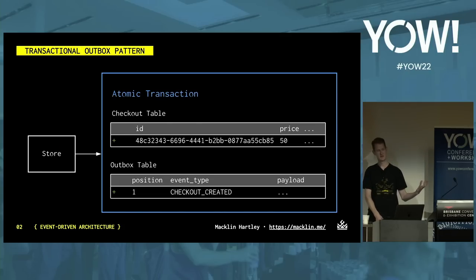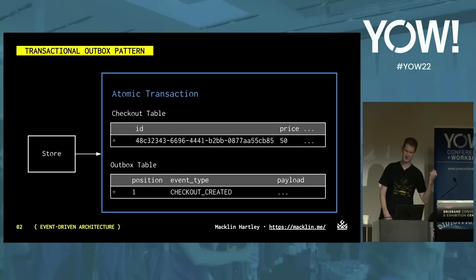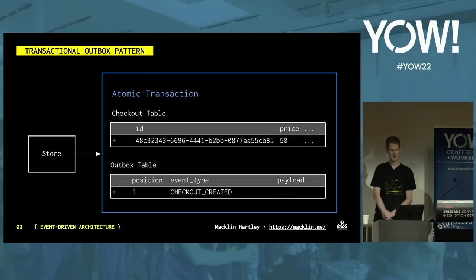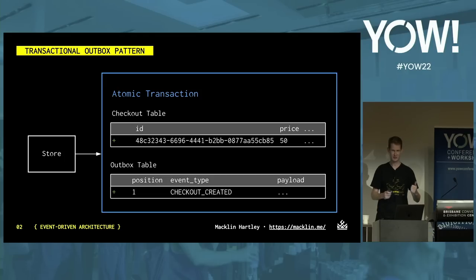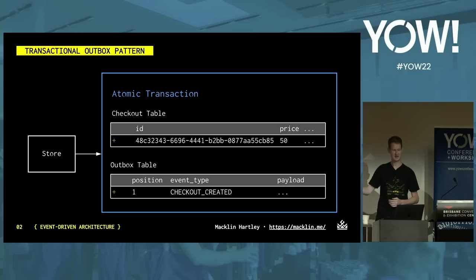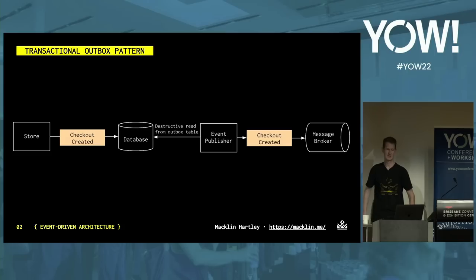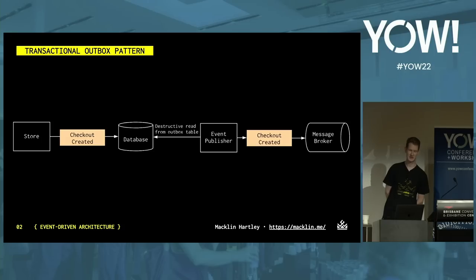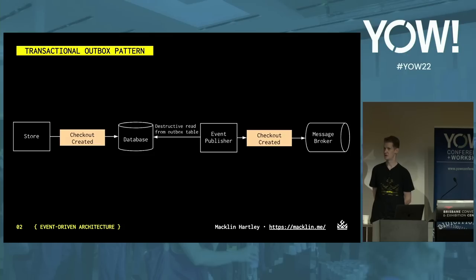Alternatively, we could use the transactional outbox pattern instead of transaction logs. We could save the business event into a separate table called the outbox table at the same time as the change occurs — and this can be done in an atomic transaction. This ensures both the row in the table gets updated and the event gets inserted at the same time. After that, a process could do what's called a destructive read for events from our outbox table before being sent to the message broker. This avoids using low-level database logs.